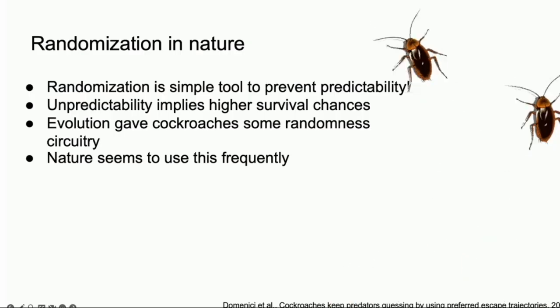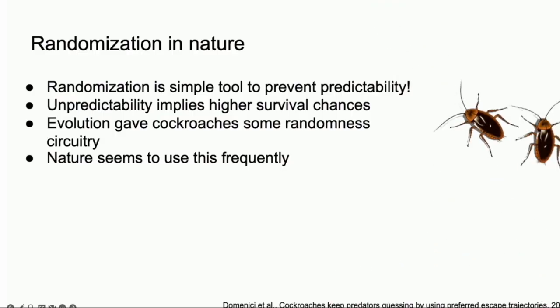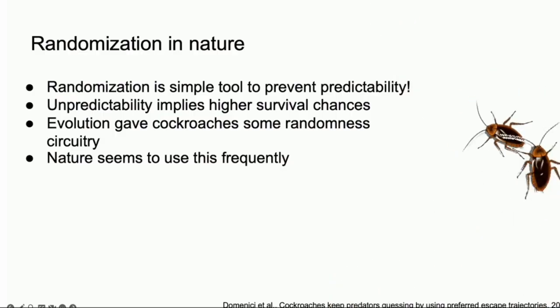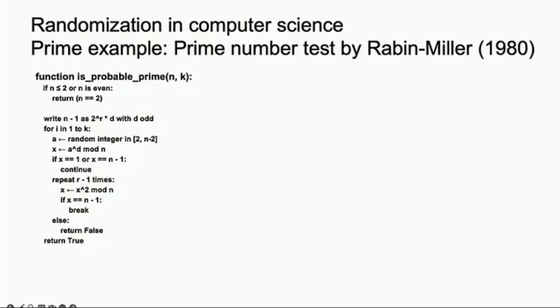It seems like evolution gave cockroaches this random circuitry in the brain, and nature does this very frequently. Looking at randomness in the computer science field, it's also not a new idea. I want to showcase this very well-known randomized algorithm whose goal is to determine whether a number is prime or not.